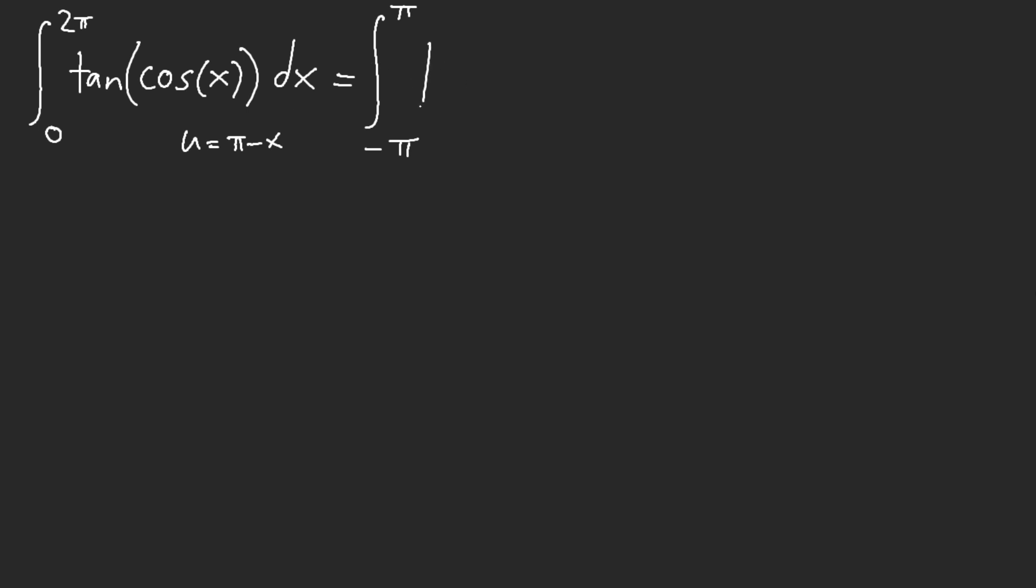So here we see that this would give us tangent, and cosine of pi minus x is negative cosine of x. So we have the negative can go out. This is an even function, so we can do symmetry on this, technically.